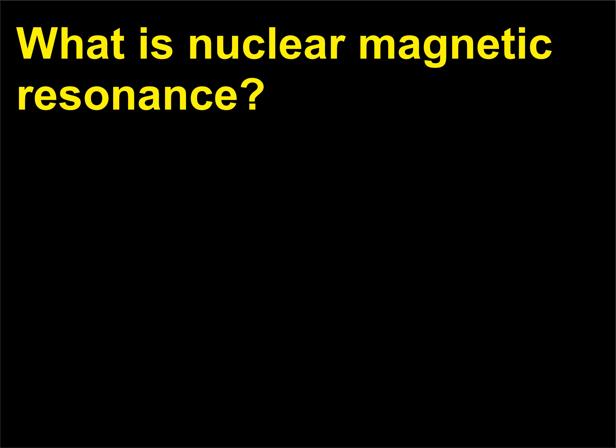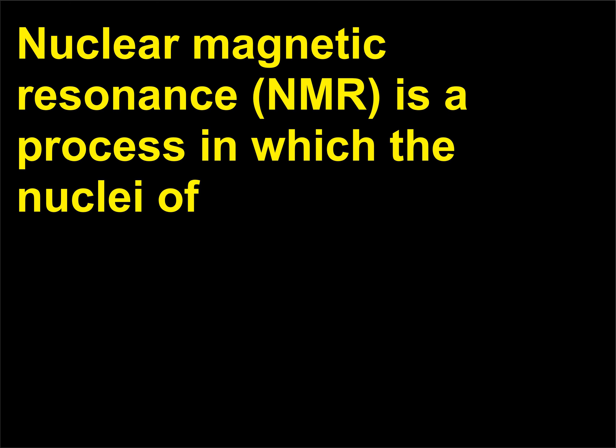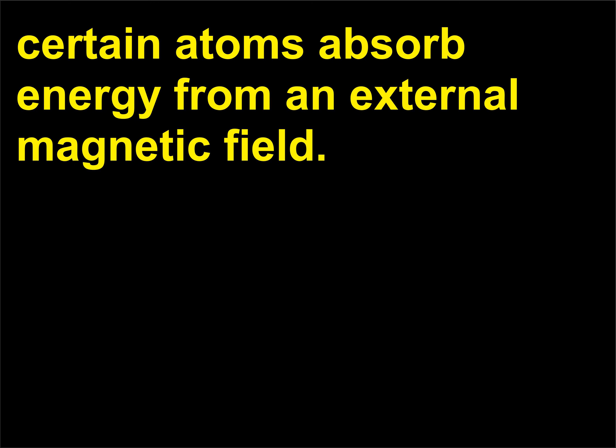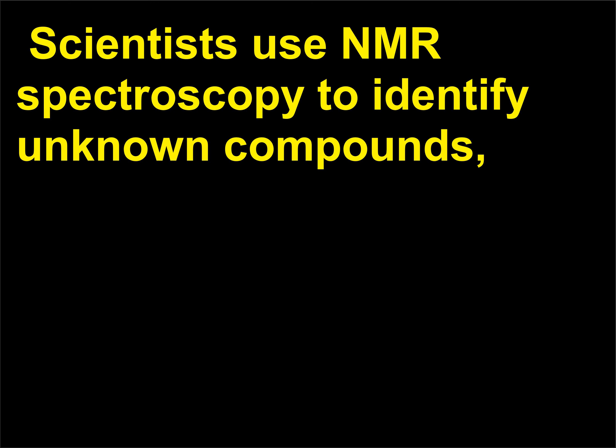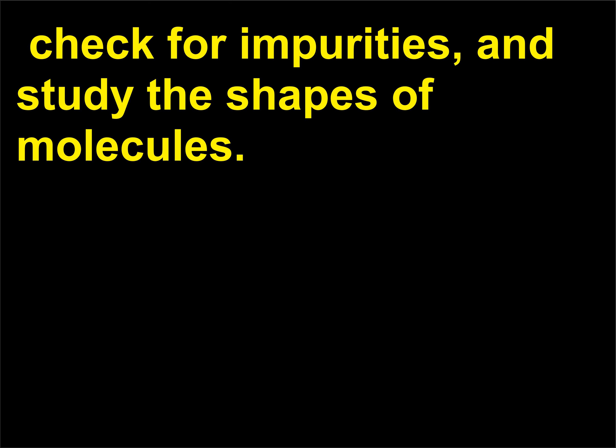What is nuclear magnetic resonance? Nuclear magnetic resonance, NMR, is a process in which the nuclei of certain atoms absorb energy from an external magnetic field. Scientists use NMR spectroscopy to identify unknown compounds, check for impurities, and study the shapes of molecules.